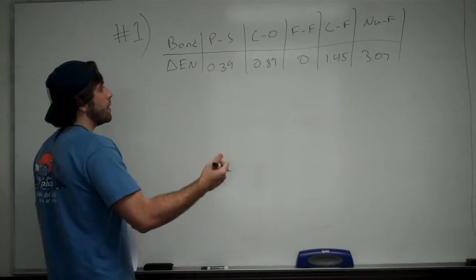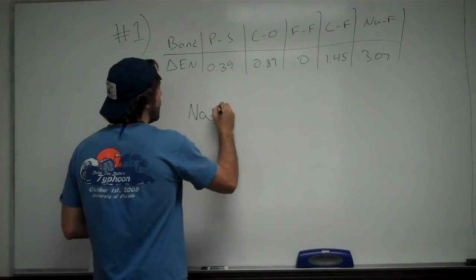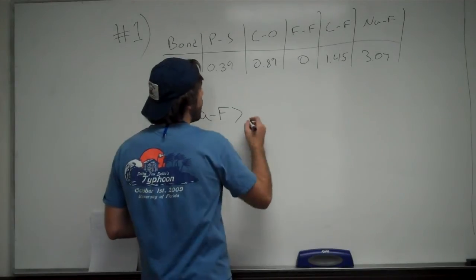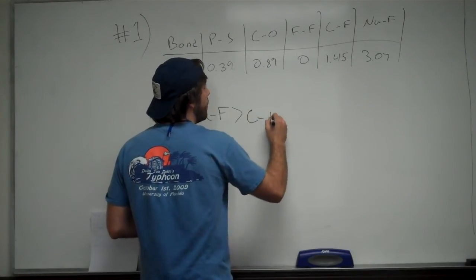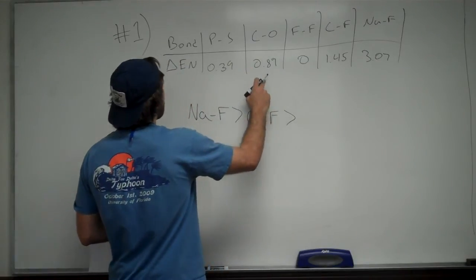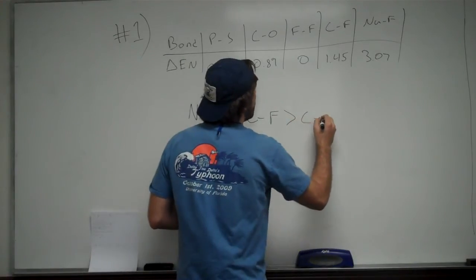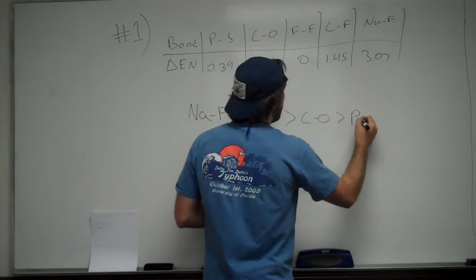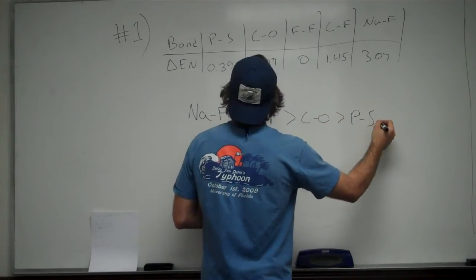The most polar is obviously going to be NaF, is greater than carbon fluorine at 1.45, is greater than carbon oxygen at 0.89, is greater than phosphorus sulfur at 0.39.